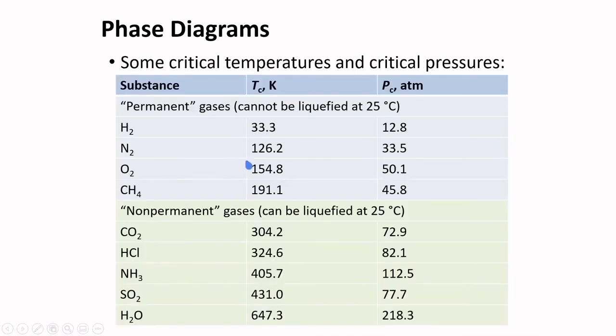Here are some critical temperatures and critical pressures. Take note that we have permanent gases. They cannot be liquefied at 25 degrees Celsius. Their critical temperatures are very low. Non-permanent gases can be liquefied at 25 degrees Celsius. Their critical temperatures are close to 25 degrees Celsius.